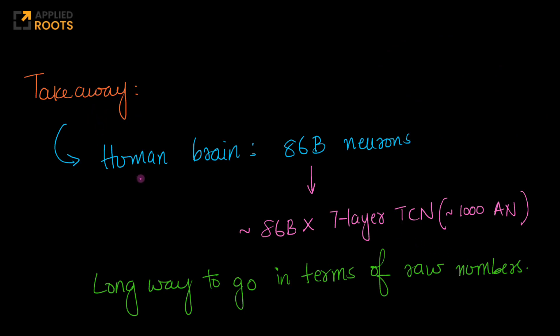What is the takeaway for us? The human brain approximately has about 86 billion neurons. Just imagine the scale of the problem. If each neuron is approximately a seven layer TCN with 1000 artificial neurons, just in terms of pure capacity, if you multiply 86 billion into 1000, that's 86 trillion. Even in terms of raw number of neurons in state-of-the-art artificial deep neural networks, we have a long way to go. There is also a lot of depth that has to be associated because each neuron is equivalent to a seven layer TCN.